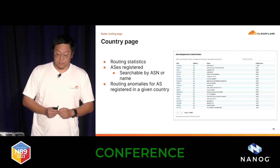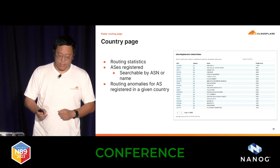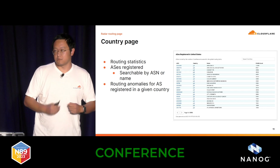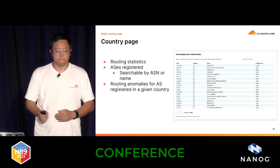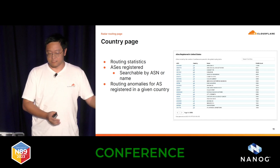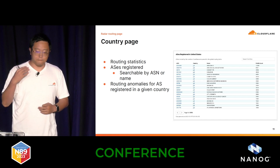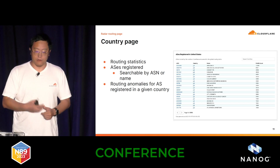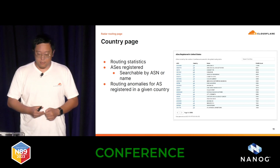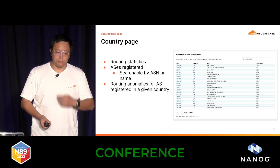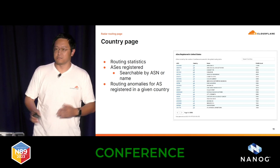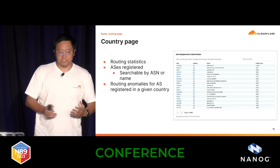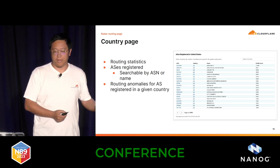For any given country, we also have routing statistics and a list of ASes registered in that country. For example, when you're investigating a country outage and want to find the biggest ASes there, you can go to the country page — it's sorted by default by number of prefixes announced — and search by name or ASN in the search bar. We also include routing anomalies associated with a given country based on registration information, so if an AS performed a hijack and is registered in that country, it will show up on the country page.